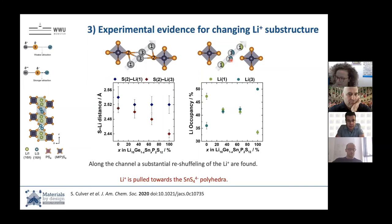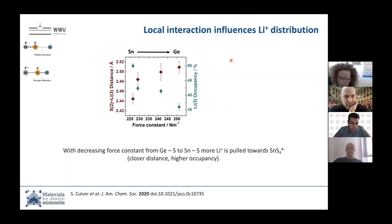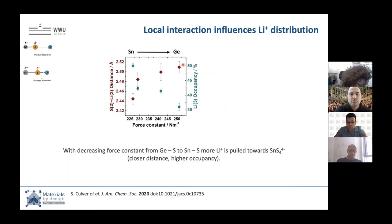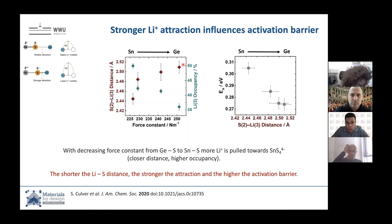We can build correlations from all of this. Plotting sulfur-lithium distance versus the force constant: a smaller force constant on your polyhedra means higher electronic charge on the sulfur, which corresponds to a shorter sulfur-lithium distance. And plotting the measured activation barriers versus the sulfur-lithium distance: the longer the distance, the weaker the bonding, and the lower the activation barrier.